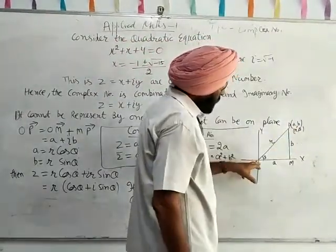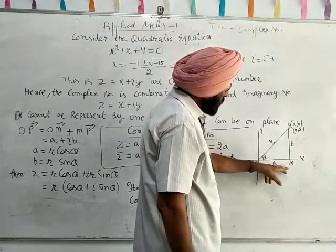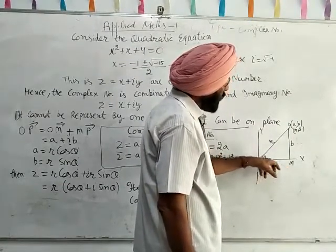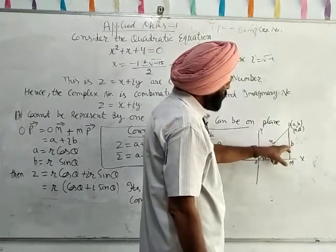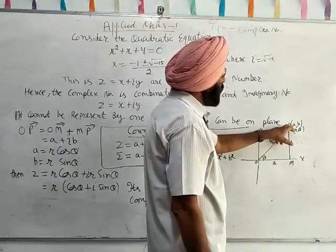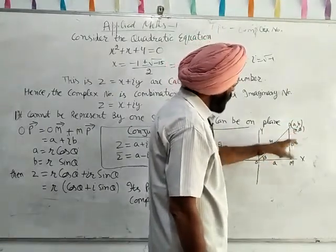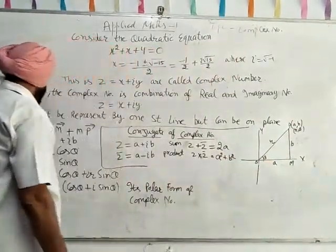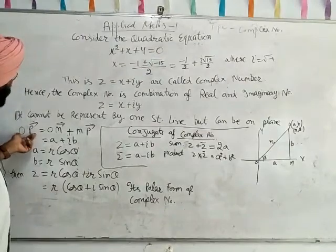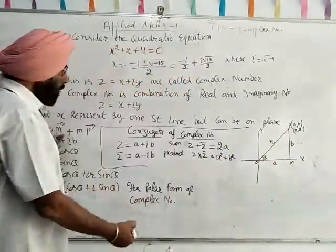This is a plane. If one real number is on the x-axis, this is OM = a, and another number is MP = b. This part b is a and b, or if it is polar form, this is r and angle theta.